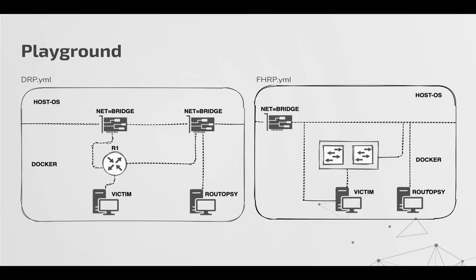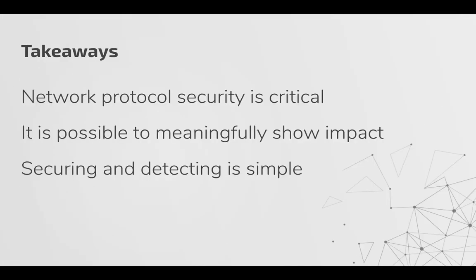We have something called the playground. Not everyone has networking kit or is familiar with network emulators like EVE-NG. You can head to our wiki and run the YAML files with Docker Compose. The DRP file spins up a victim, a router, and the Rootopsy container. Running the attacks redirects traffic from the original path towards Rootopsy and back out. The FHRP file has two VRRP containers and a victim — after running Rootopsy, traffic is first redirected to you and then back upstream.